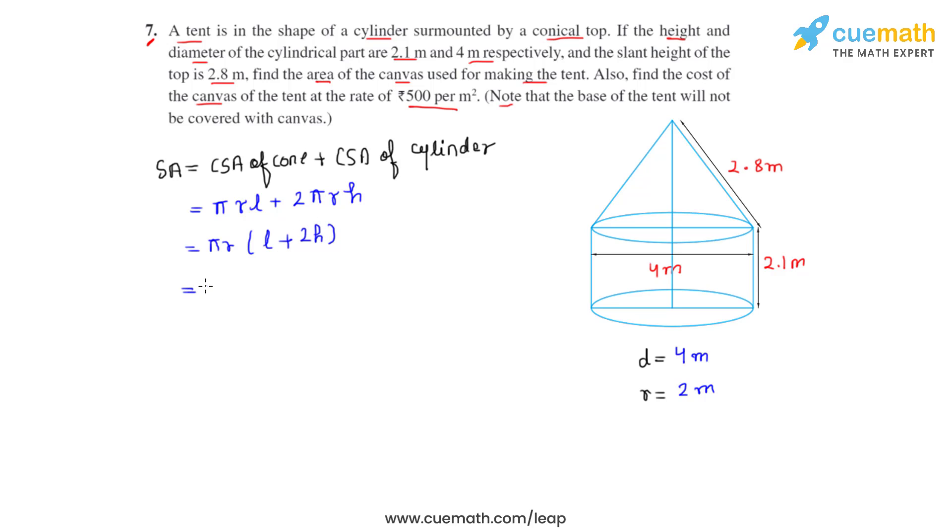Now let's substitute the values. We write 22 by 7 times 2, L is 2.8 plus 2 times height. Height is 2.1 meters, so when multiplied with 2 will give us 4.2.